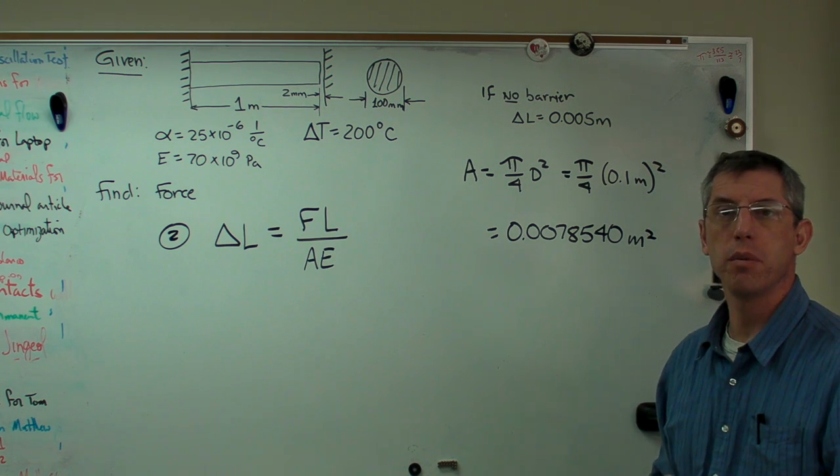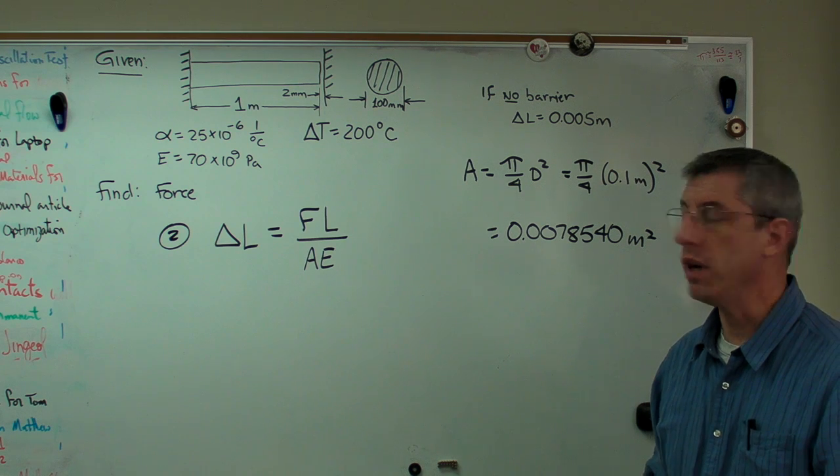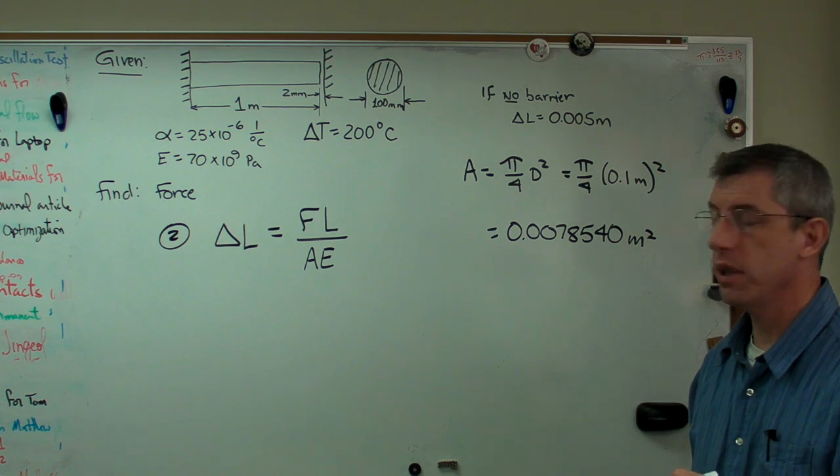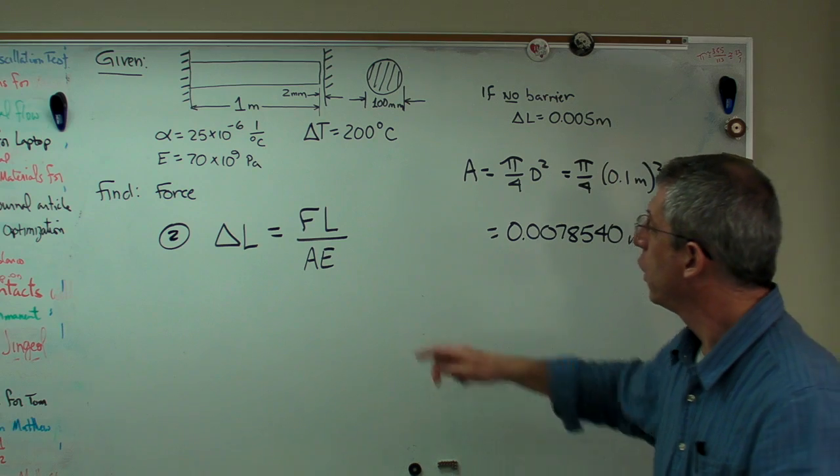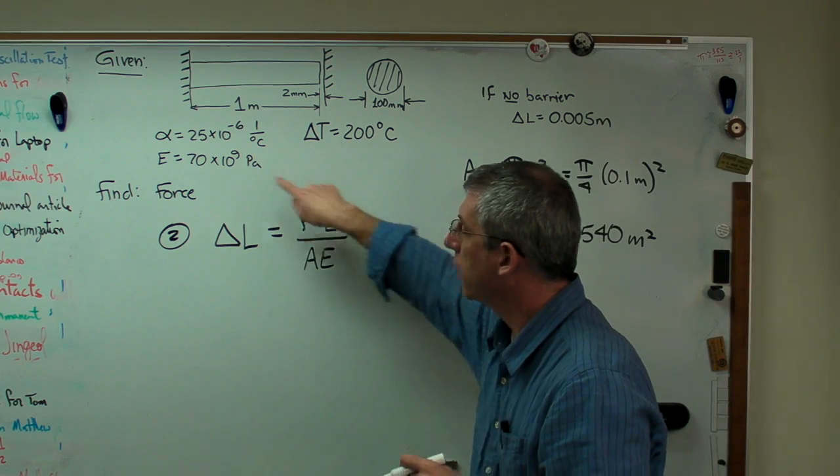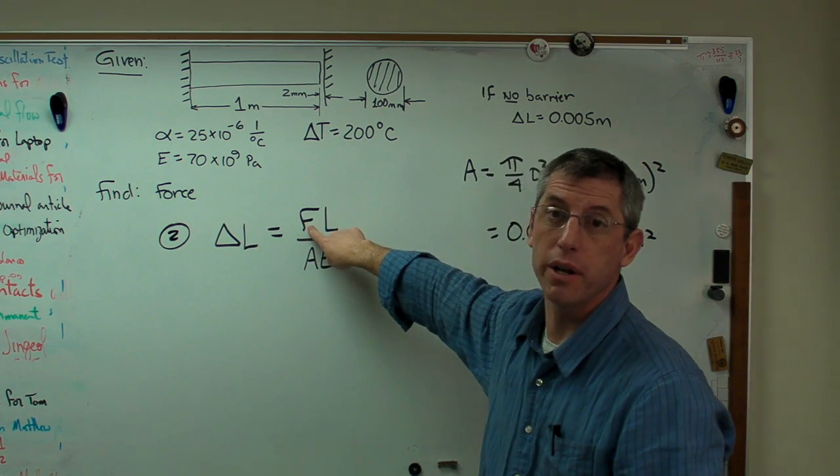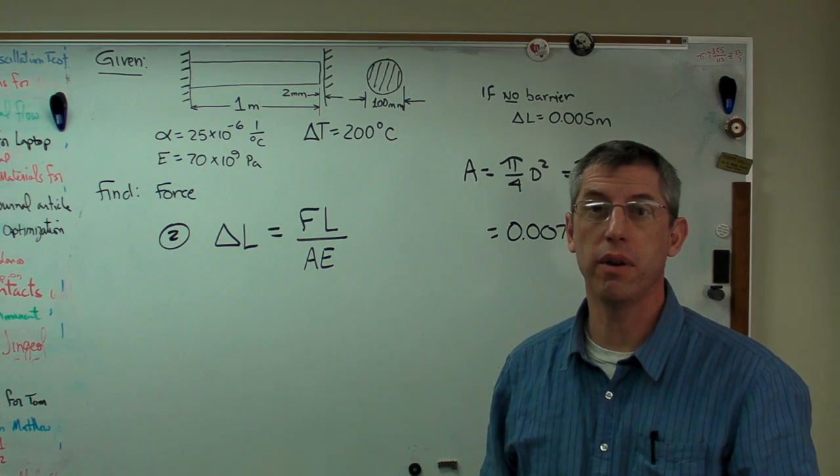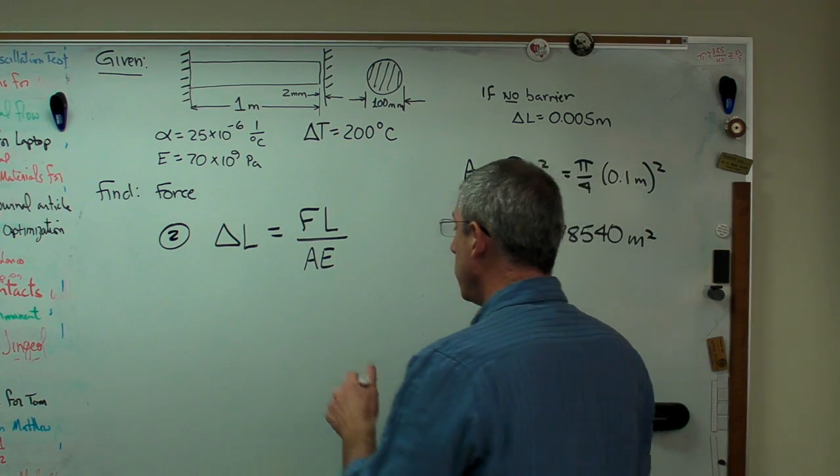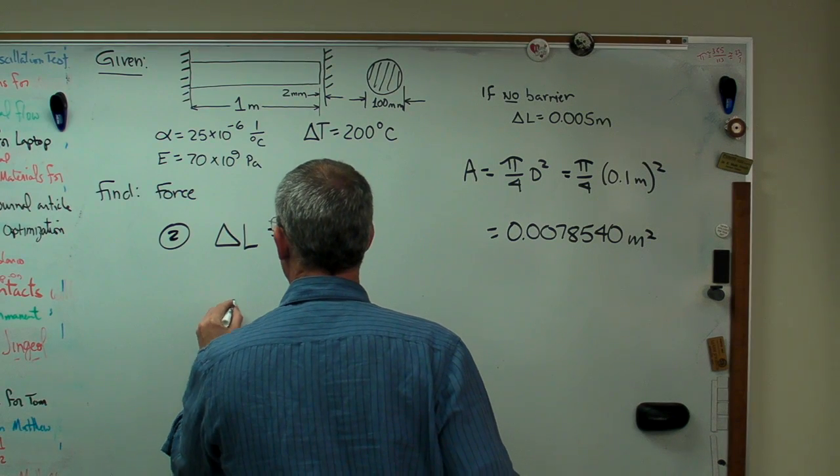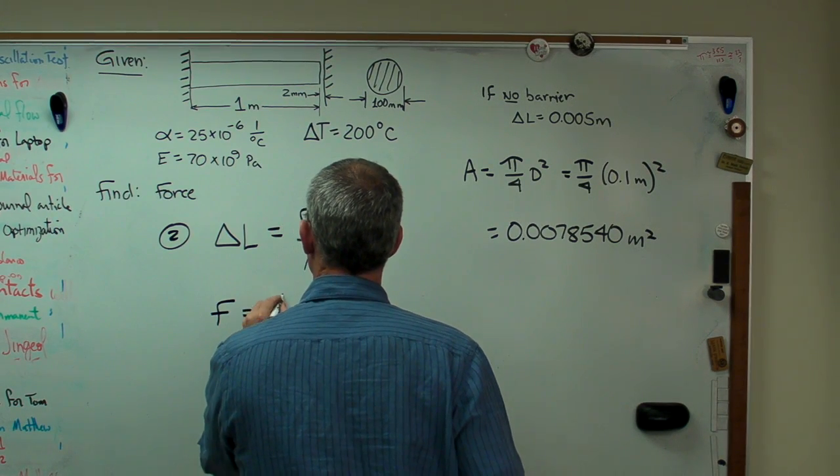Now, I'll tend to do these problems using 5 significant figures. So there's the answer to 5 significant figures. Now, go back to our governing expression here. What I really want is force. Force is on the wrong side of the equal side. So let me rearrange this expression. Do just a little bit of algebra here.